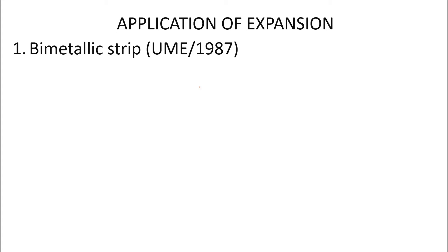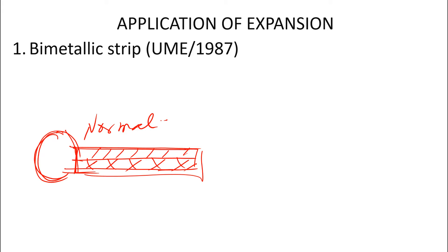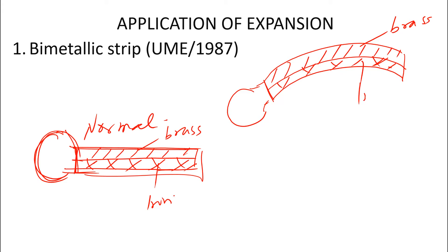Bimetallic strip — this contains two metals: brass and iron riveted together. At a normal temperature the strip is straight. But when the temperature is increased, it curves with the brass coming outside and the iron inside. This is the bimetallic strip at increased temperature.